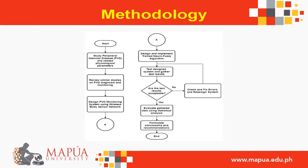For our methodology process, a study on peripheral vascular disease and related physiological parameters must be conducted. We reviewed similar studies regarding PVD diagnosis and how it is monitored. After which we designed a PVD monitoring system that incorporates the use of wireless body sensor networks. A neurofuzzy algorithm was designed and trained for the ABI calculation. Using the designed system, tests were performed, and while the test results were unacceptable, we fixed errors and redesigned the system. We then evaluated the accepted test results using statistical analysis, and finally formulated conclusions and recommendations.